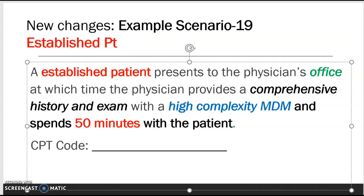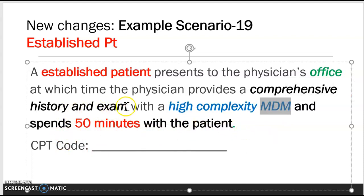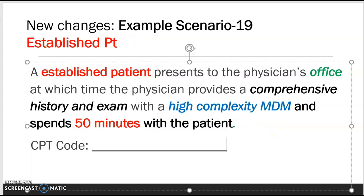Here is another scenario for the established patient with the new changes. An established patient presents to the physician's office, and the physician provides a comprehensive history and exam with high complexity of MDM — medical decision making — and spends 50 minutes with the patient. Remember, we need three key components of evaluation and management: history, exam, and medical decision making. These are the most important key elements, which you also use with other codes outside of office and outpatient services.